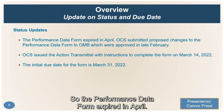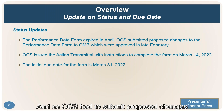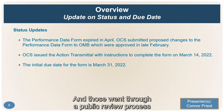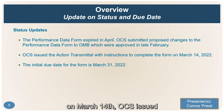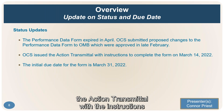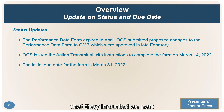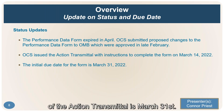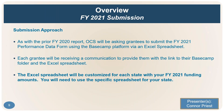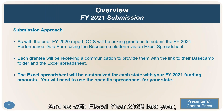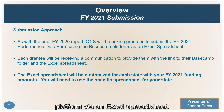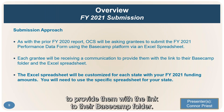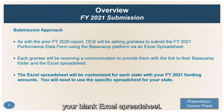The performance data form expired in April, so OCS submitted proposed changes to OMB. Those went through a public review process and were approved in late February. On March 14th, OCS issued the Action Transmittal with instructions to complete the form, with an initial due date of March 31st. As with fiscal year 2020, OCS will be asking grantees to submit the 2021 performance data form using the Basecamp platform via an Excel spreadsheet. Each grantee will receive a communication with a link to their Basecamp folder, which will contain their blank Excel spreadsheet.